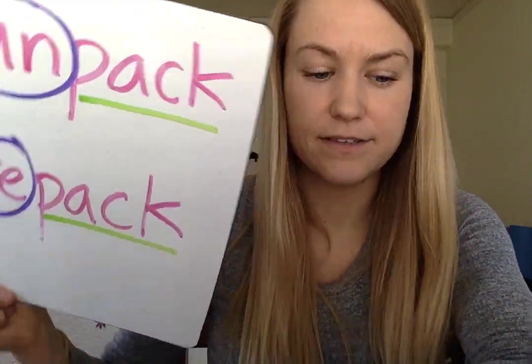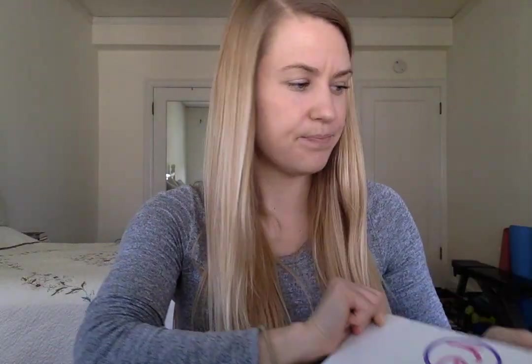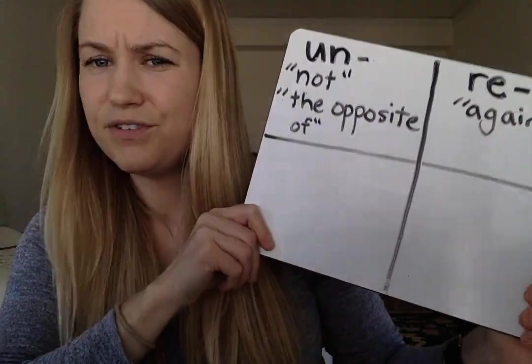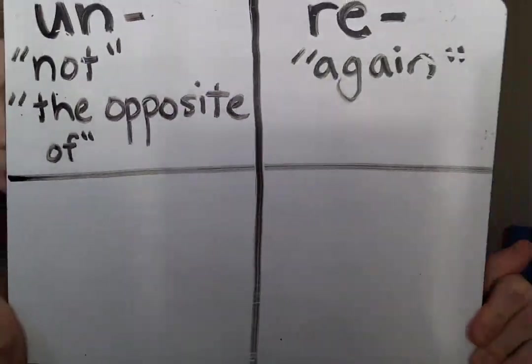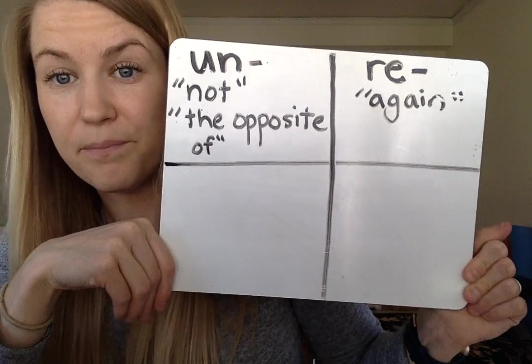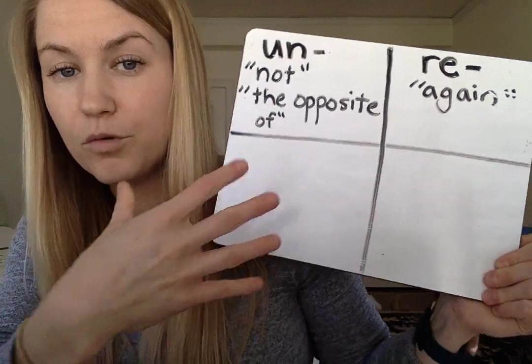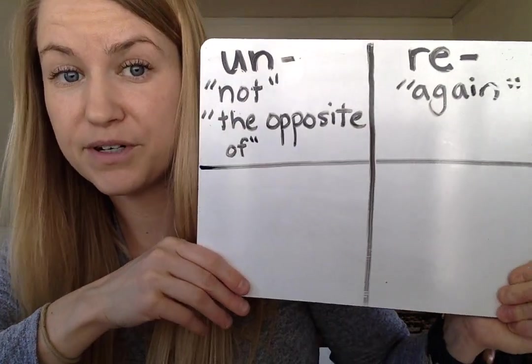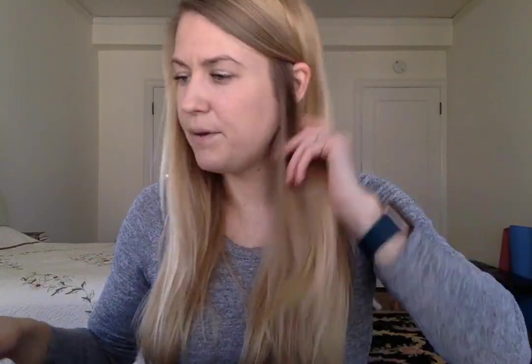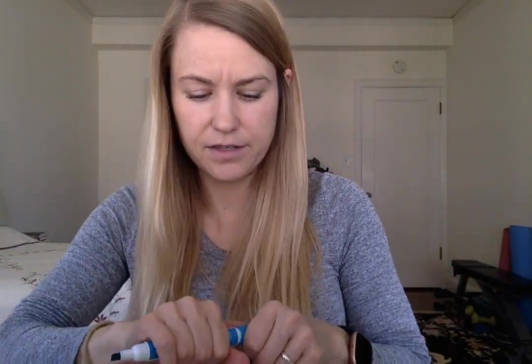And sometimes 'un' means 'not.' Let me show you some. I have a little chart here — feel free to pause the video and make it. We'll place and categorize some of our words. For example, how about the word 'unlock'? Unlock. What prefix do you hear in 'unlock'? The 'un.'